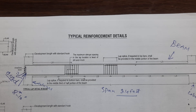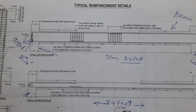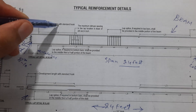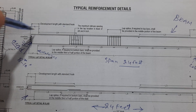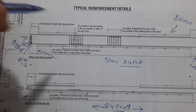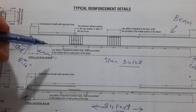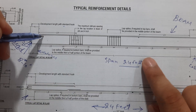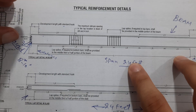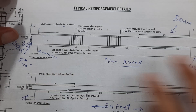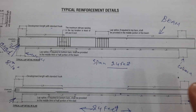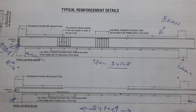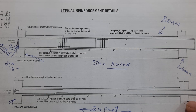Next, you can see here the development length with standard hooks. We have l/4 on one side and l/3 on the other side. The l/3 or l/4 value depends on the span between two columns or the span of any structure.